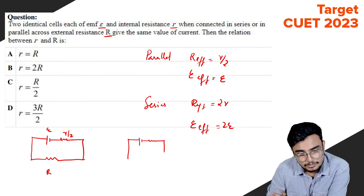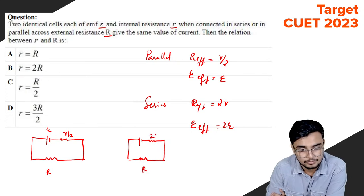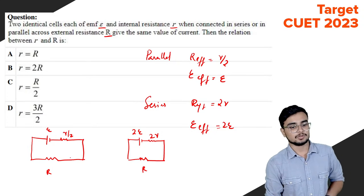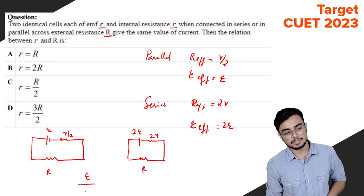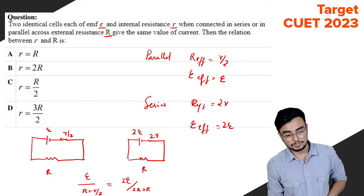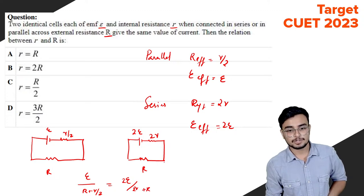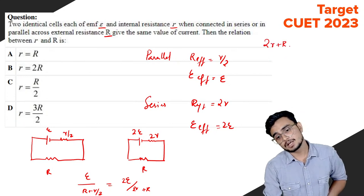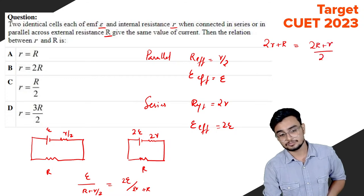For the parallel connection, there is external resistance R, effective EMF E, and effective internal resistance r/2. For the series connection, effective EMF is 2E and effective internal resistance is 2r. Setting the currents equal: E divided by (R + r/2) equals 2E divided by (2r + R), which gives 2R plus r equals 2R plus r/2, rearranging to get R equals r.